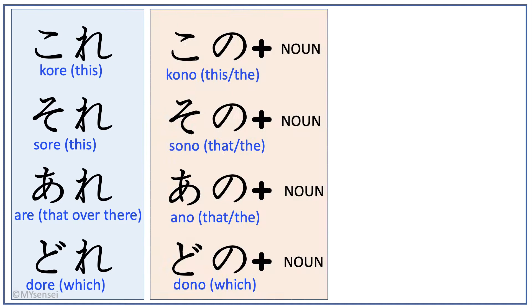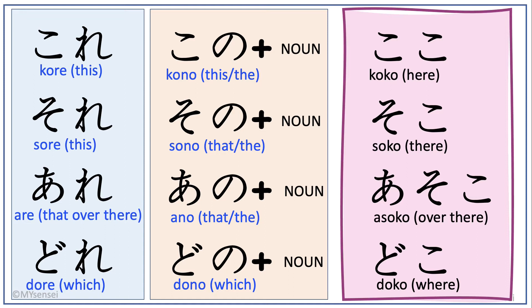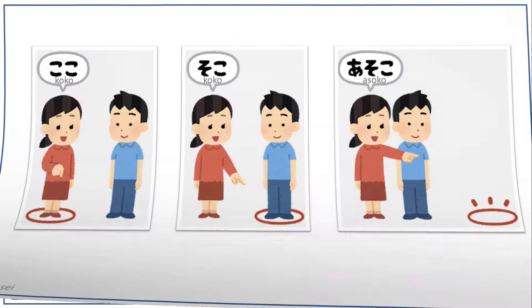There are two other videos that I made on kore, sore, are, dore and kono, sono, ano, dono — these are words you can use to point at things. We will be using the same concept of ko, so, and a and apply them to tell locations as seen in koko, soko, and asoko. There are many ko/so/a/do groups in Japanese and these are just three of them.